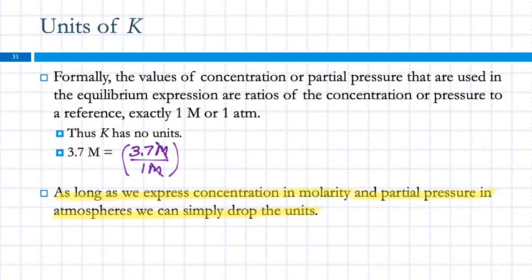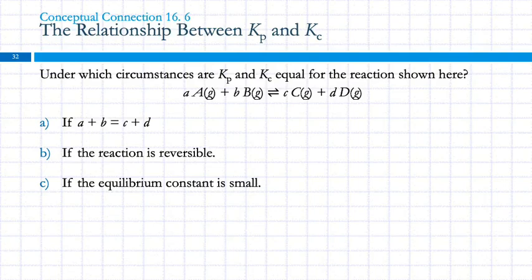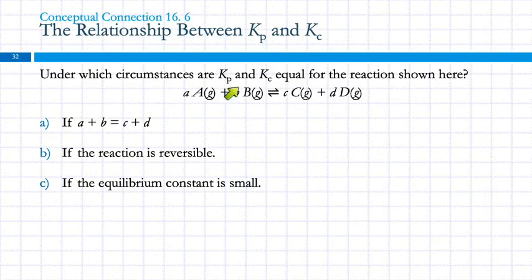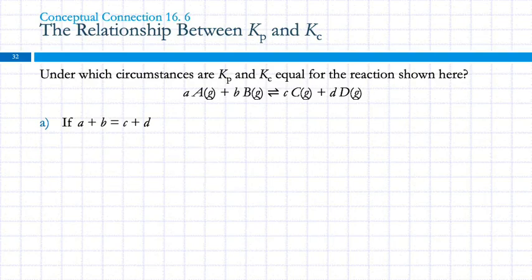K has no units. Here's a conceptual problem: under which circumstances are Kp and Kc equal for the reaction shown? The answer is when A plus B equals C plus D — because the relationship depends on delta N, and if C plus D equals A plus B, then delta N is zero and Kp equals Kc. When doing problems, if you need to go back and forth between concentration and pressure, check the moles of gases on each side. If they're the same, you can convert freely.